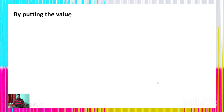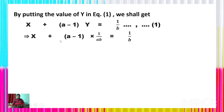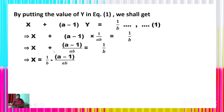Now by putting the value of y in equation 1, we get: x + (a−1)y = 1/b, which gives x + (a−1)×(1/ab) = 1/b. So x + (a−1)/(ab) = 1/b, and transposing: x = 1/b − (a−1)/(ab).